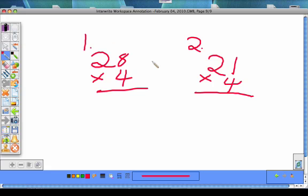For example, 28 times 4. First you multiply the numbers in the ones place. For example, 8 times 4. 8 times 4 equals 32.